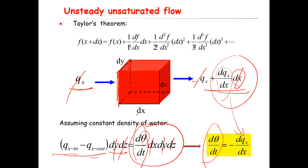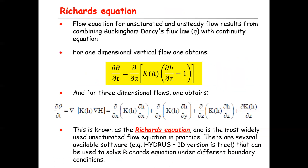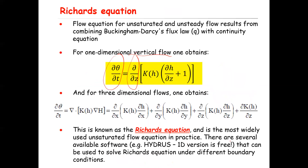Now we substitute q with the Buckingham-Darcy velocity. For vertical flow, including the gravity term, the derivative of water content with respect to time equals the derivative with respect to z of K times the derivative of matric potential with respect to z plus one. The minus sign from Buckingham-Darcy — q equals minus K times the hydraulic gradient — cancels with the minus sign, giving a positive result. The '+1' term accounts for gravity. This equation describes unsteady, unsaturated, one-dimensional vertical flow.